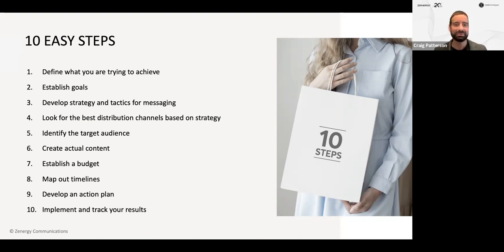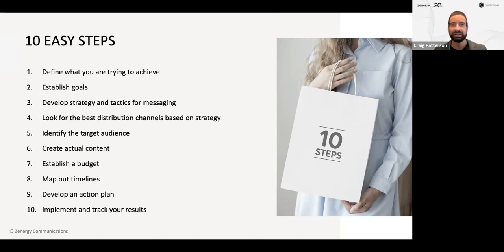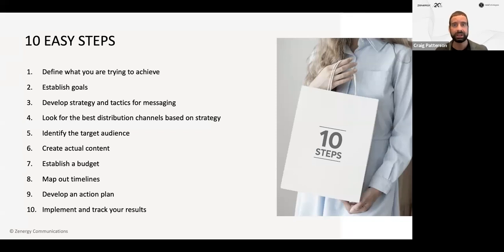Step five: create the actual content — that can be social media posts or articles. Step six: establish a budget. What resources are you able to dedicate — money, people, and time? Step seven: map out timelines, including being realistic. It might take at least 20 days. Step eight: develop an action plan — how are you going to get this message out to your target market? Step nine: implement and track your results, looking at ways to improve within the current campaign or for future campaigns as well.